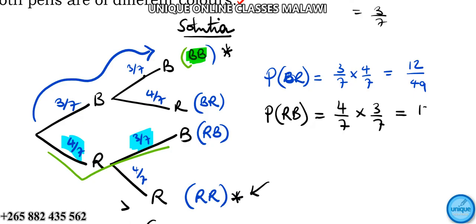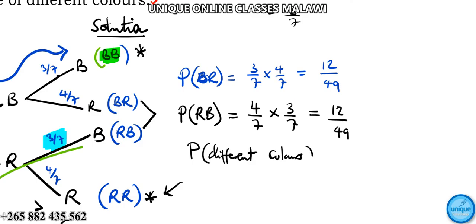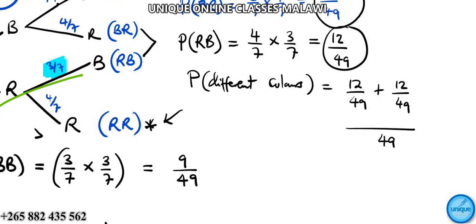What about this route? P(RB) equals 4 over 7 times 3 over 7. 3 times 4 is 12, so 12 over 49. P(different colors) is the sum of these, which is 12 over 49 plus 12 over 49. Common denominator is 49: 12 plus 12 equals 24, giving 24 over 49.